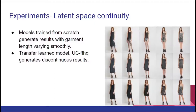The second property we looked into is latent space continuity. Models trained from scratch without any pre-trained weights have better continuity in the latent space — images change more smoothly than when using pre-trained weights. In the image shown, the first row is from the transfer-learned model and the other two rows are from models trained from scratch, one unconditioned and one pose-conditioned. The transfer-learned model shows unrelated images in between, whereas models trained from scratch generate continuous results, with dress length decreasing gradually rather than showing abrupt changes.